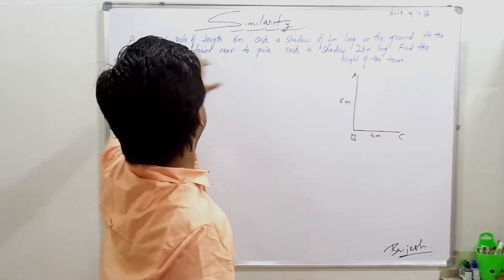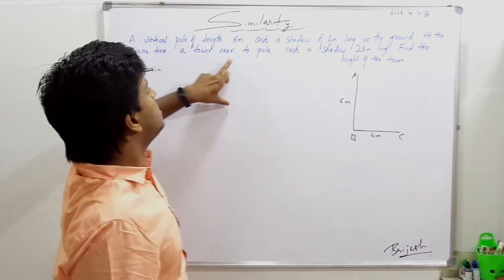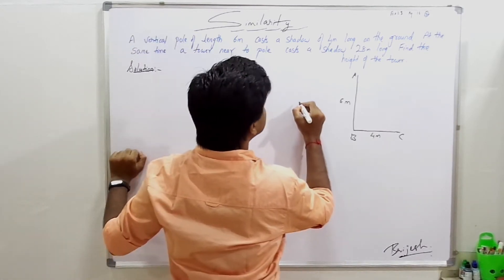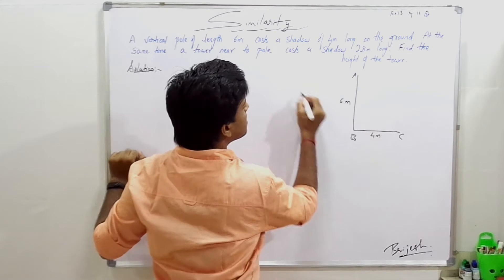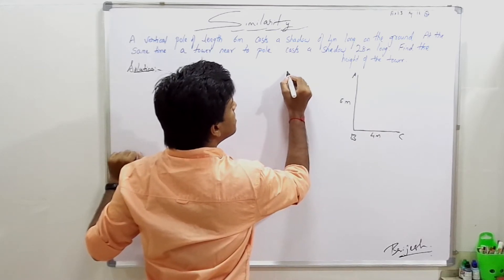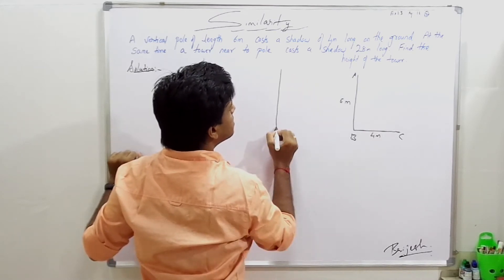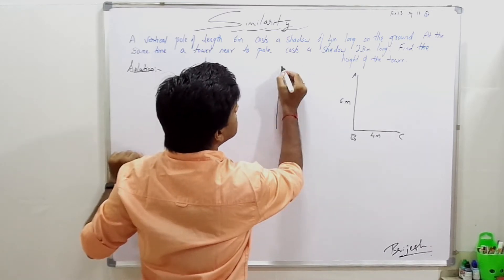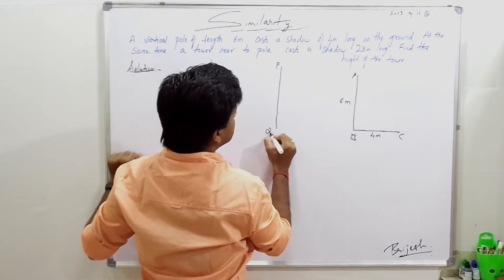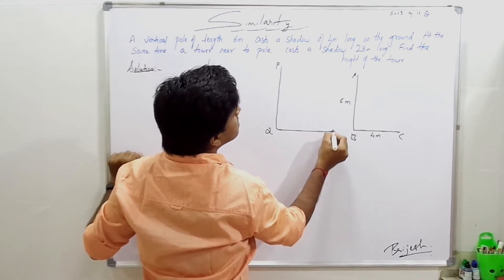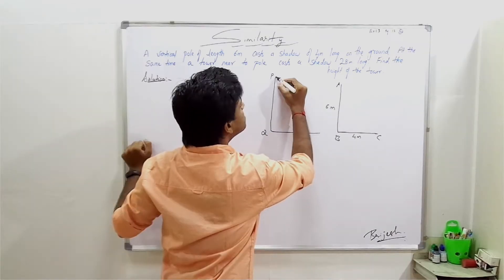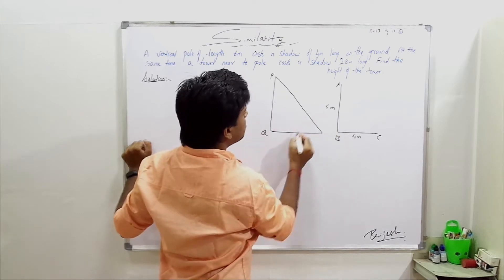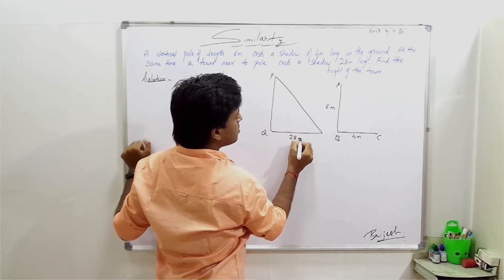At the same time, a tower near the pole casts a shadow of 28 meters long.